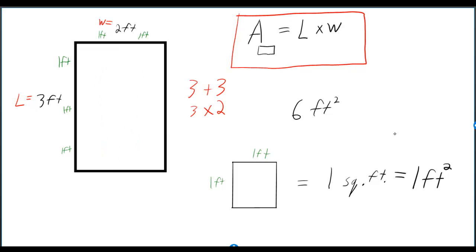So even if those grid lines weren't there, and someone gave you the length and the width, you would just multiply them by writing three feet times two feet, and then writing the answer here as six square feet.